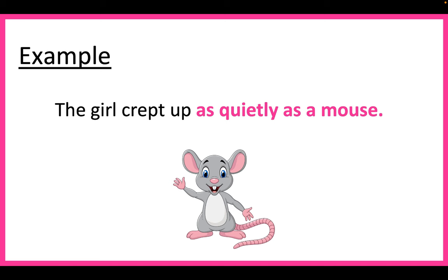For example, the girl crept up as quietly as a mouse. This example means that the girl was very quiet — no sound could be heard as she crept up.